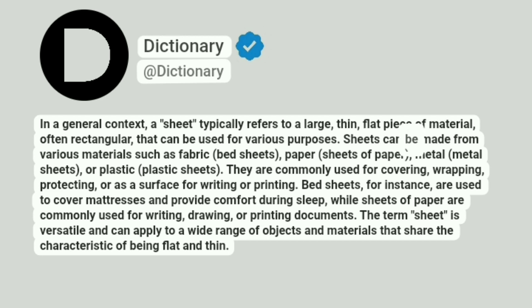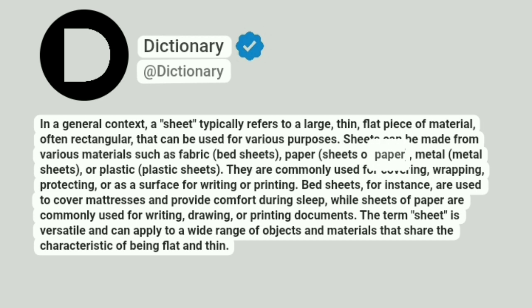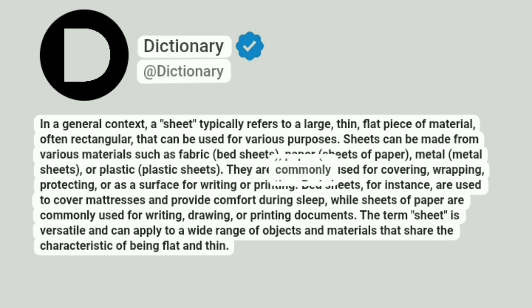Sheets can be made from various materials such as fabric (bedsheets), paper (sheets of paper), metal (metal sheets), or plastic (plastic sheets). They are commonly used for covering, wrapping, protecting, or as a surface for writing or printing.